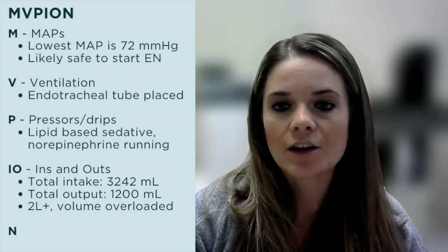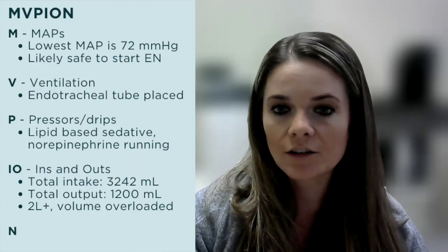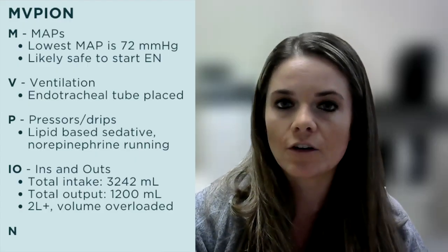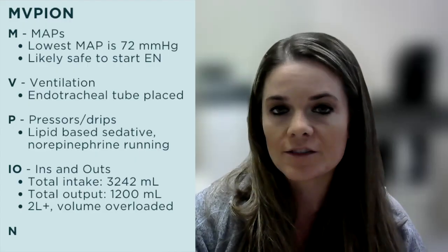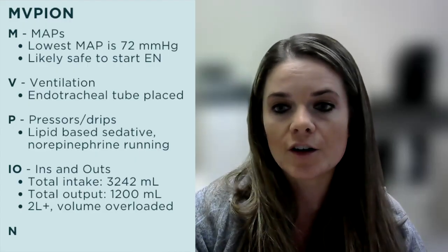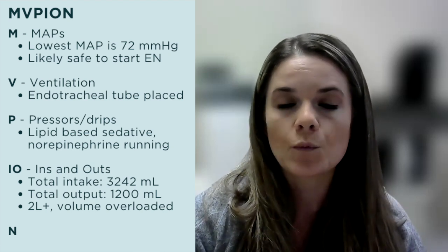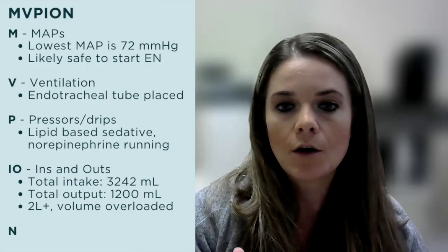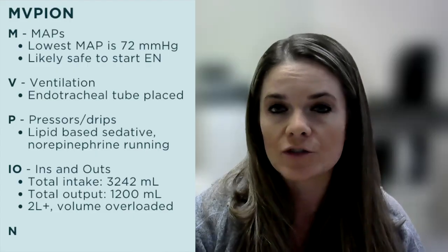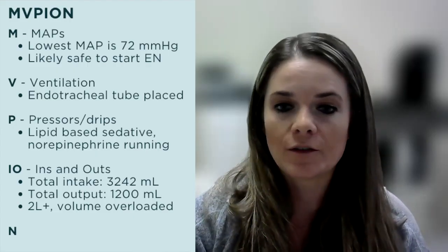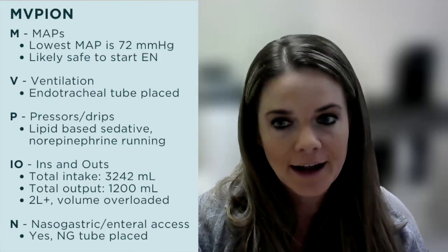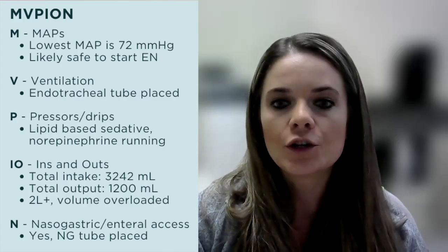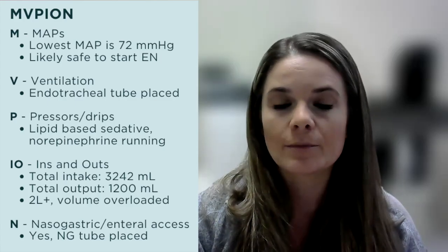The I and O in the acronym stand for ins and outs. Reviewing the ICU flow sheet, you find that Mr. Smith received 3,242 mL of fluids over the last 24 hours, while 1,200 mL exited his body. This means Mr. Smith is positive approximately two liters of fluid, indicating he is volume overloaded. The N stands for nasogastric access — you confirm that Mr. Smith has a nasogastric tube in place.